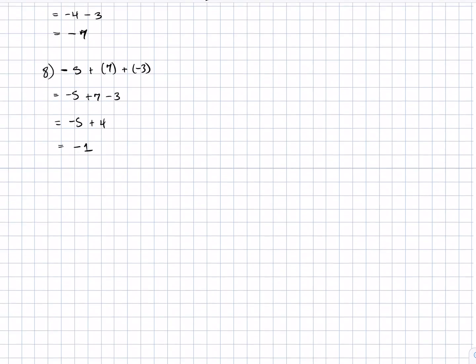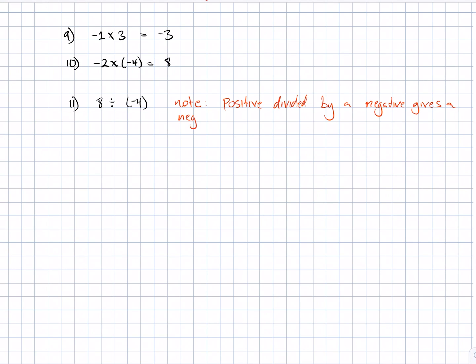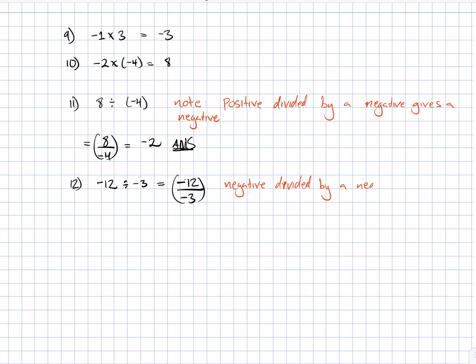Example 9: Here we are looking at multiplication. Negative 1 times 3 equals negative 3. Example 10: Negative 2 times negative 4 gives us positive 8. Example 11: 8 divided by negative 4 — a positive divided by a negative gives a negative, so the answer is negative 2. Example 12: Negative 12 divided by negative 3 — when a negative is divided by a negative, the answer is positive, giving us positive 4.